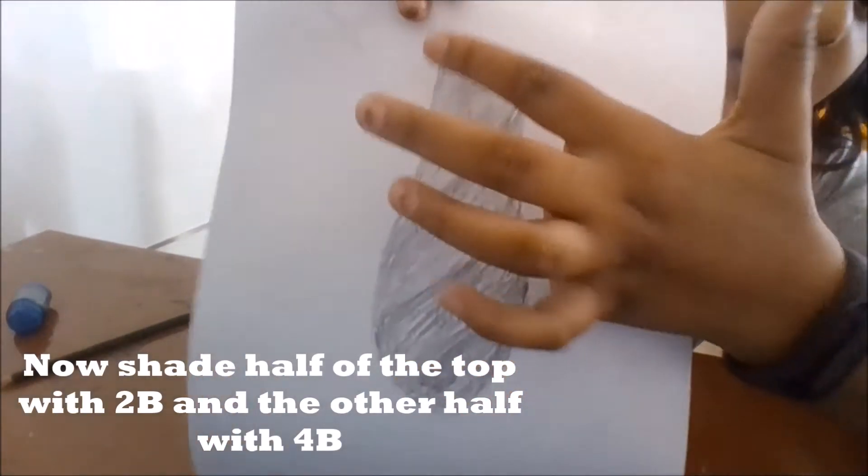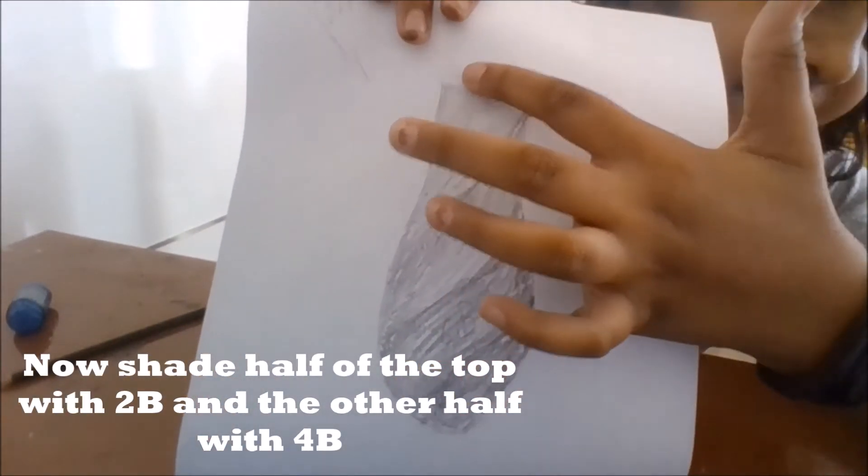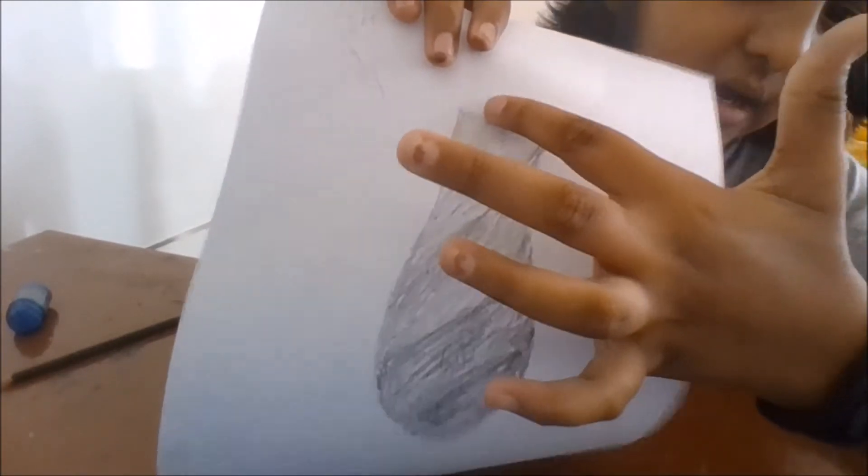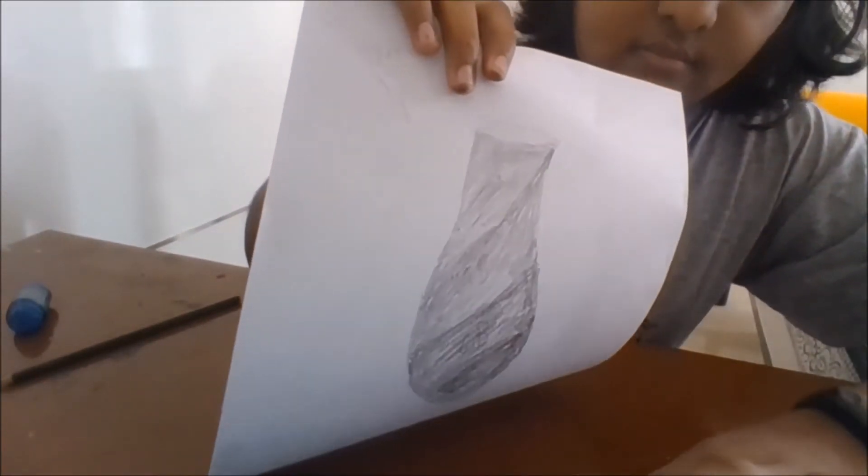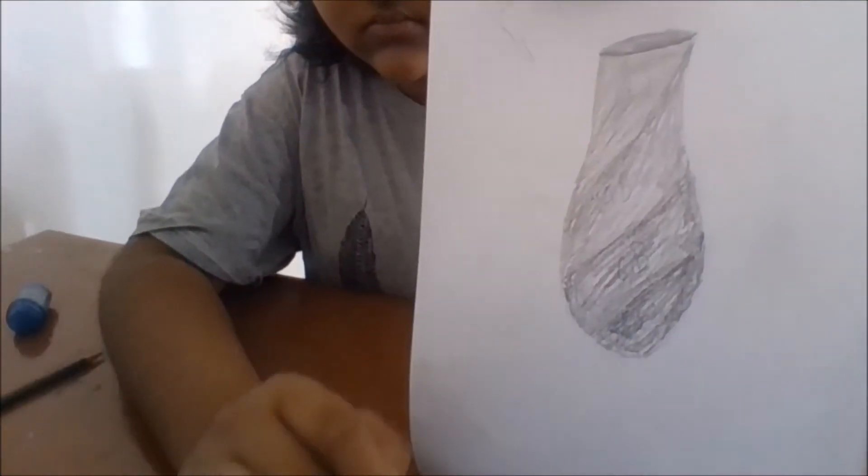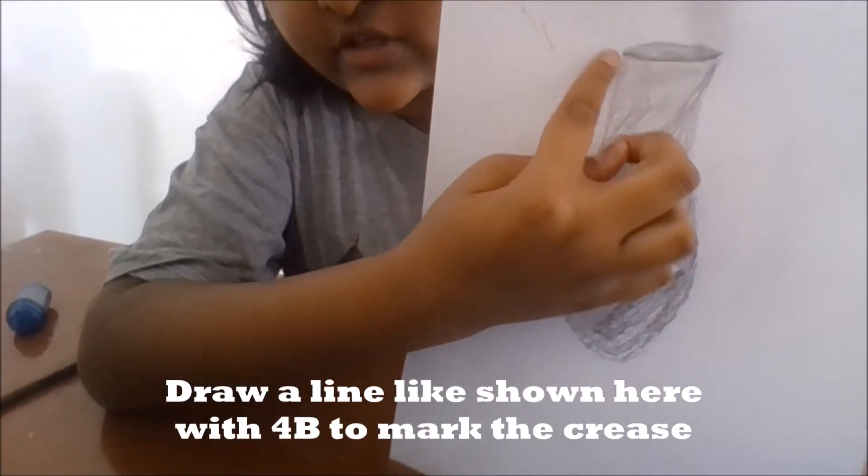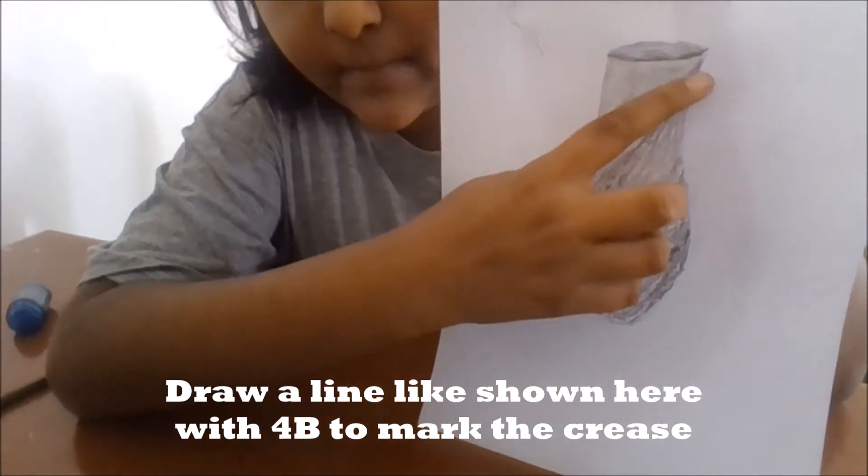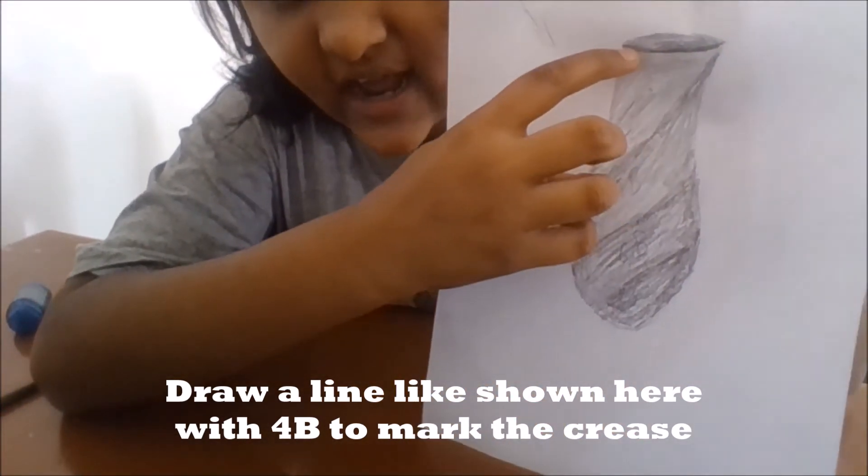Now for the oval on top, you want to shade the left half of the circle with 2B and the right half with 4B. Now we are done with the shading. The last thing for the shading is to mark a crease line like shown with the 4B pencil.